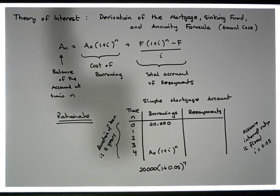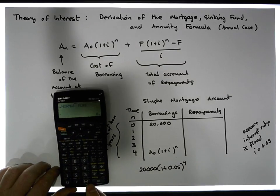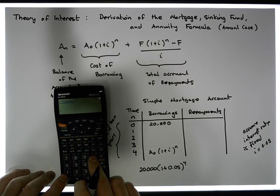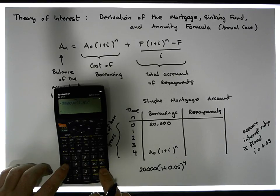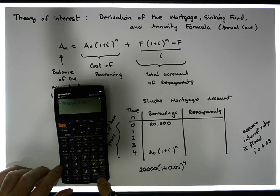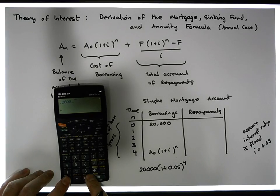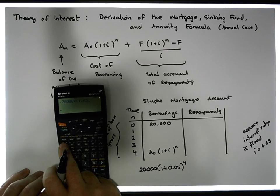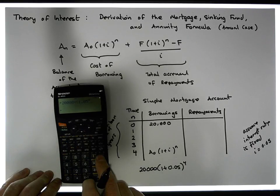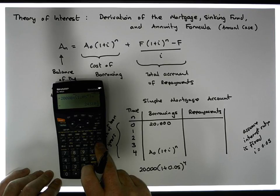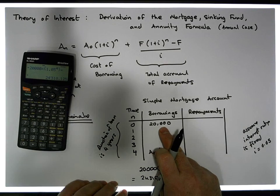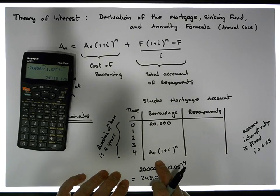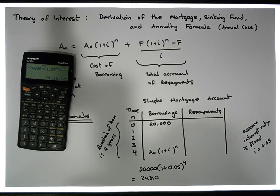What we need to repay the bank is twenty thousand euros multiplied by one plus 0.05, which is 1.05, raised to the power of four. When I calculate that — twenty thousand times 1.05 raised to the power of four — the total I have to repay is twenty-four thousand three hundred and ten euros. So if I borrow twenty thousand euros from the bank over the course of the mortgage, I'm going to have to repay twenty-four thousand three hundred and ten euros.